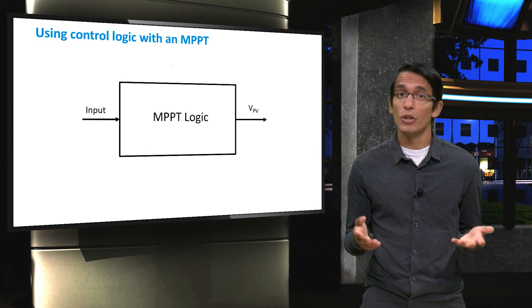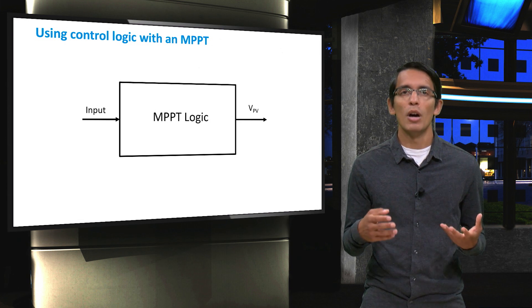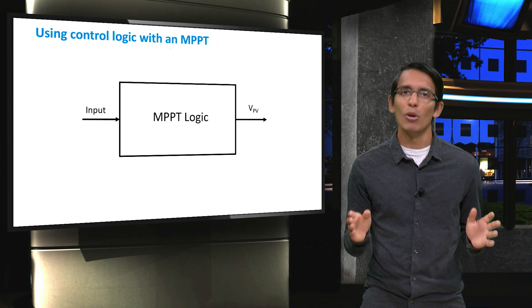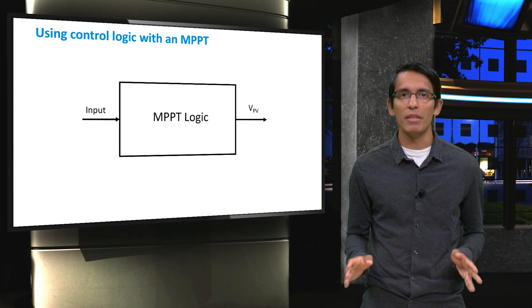If the MPPT algorithm is good, this VPV should be as close as possible to our desired VMPP of the solar array or panel. This block diagram will be shown for every method that I share with you.